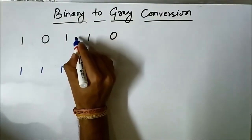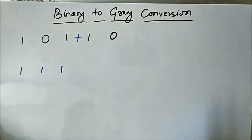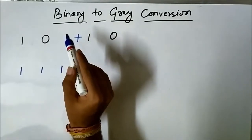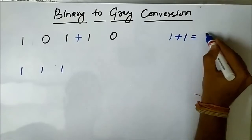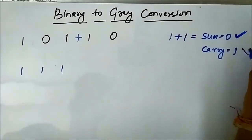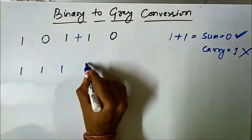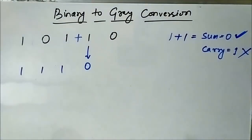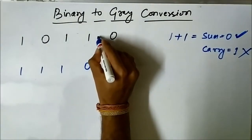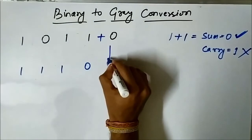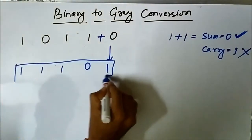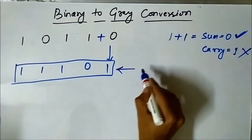Again you forget about that addition and perform the addition of the next two bits: 1 plus 1. Here an important concept is present — whenever you perform the addition of two 1 bits, we know 1 plus 1 gives sum equal to 0 and carry equal to 1. We consider only the sum part and discard the carry. So 1 plus 1 gives result 0. Then we perform the addition of these two bits: 1 plus 0, the result is 1. So here we got the gray code equivalent to binary 10110.